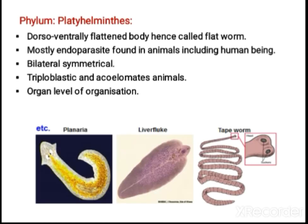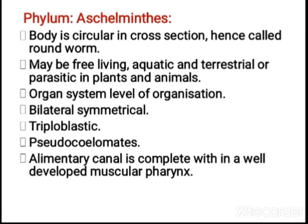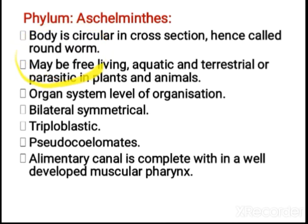Like that, Planaria shows high regeneration capacity. Here is Planaria shown. Next examples are Taenia tapeworm and Fasciola, that is liver fluke. Now, Aschelminthes — here you can call them roundworms because the body is circular. The previous one had a dorso-ventrally flattened body, so flatworm; this one is known as roundworm.